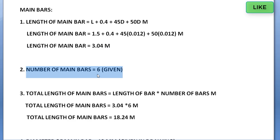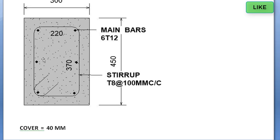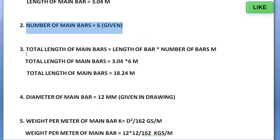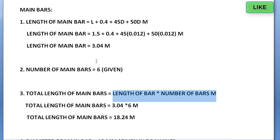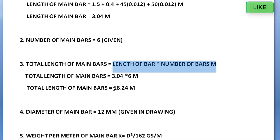The number of bars from the drawing is six. The total length of main bars formula is length of bar into number of bars. So 3.04 into 6 equals 18.24 meters — that is the total length of main bars.